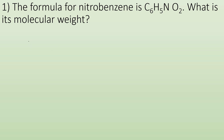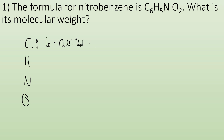It's always helpful to set your work up nice and neat. Go carbon, hydrogen, nitrogen, and oxygen. You want to figure out what is the mass from each of those elements and then add them all together to get the molecular weight. Carbons — I've got six of them, and each carbon is 12.01 grams per mole, which gives me 72.06 grams per mole from just the carbon.